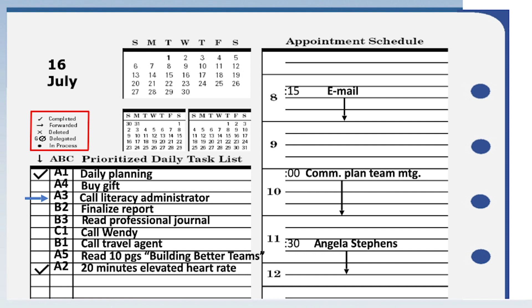A4 is on the way home, so let's go to B1. I'm going to delegate this task instead of doing it myself — I'll delegate to Betsy. I put Betsy's initial out to the side of the box. Once I talk to Betsy and she agrees to take care of it, I put a circle there. That circle tells me it requires follow-up. Every time I look at it during the day, it reminds me that Betsy's working on it. If I'd heard back, there'd be a check mark inside the circle.